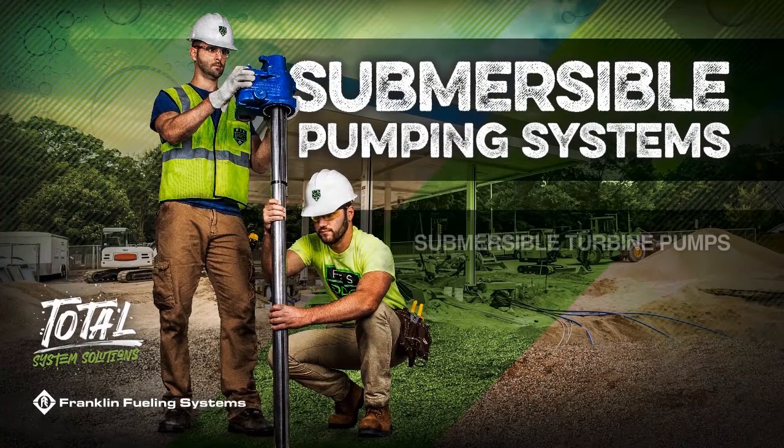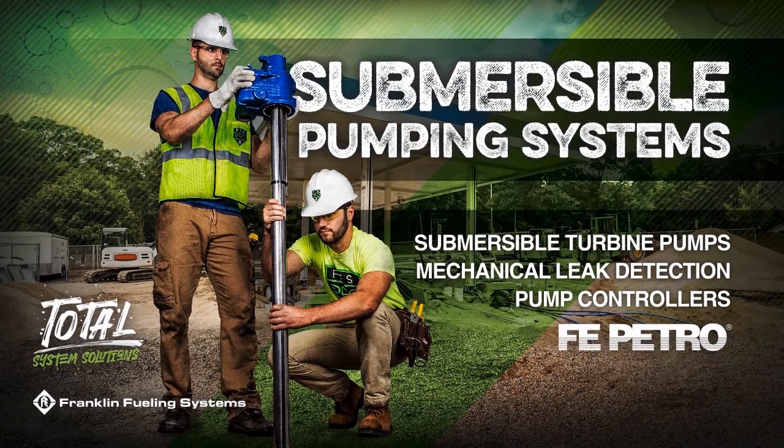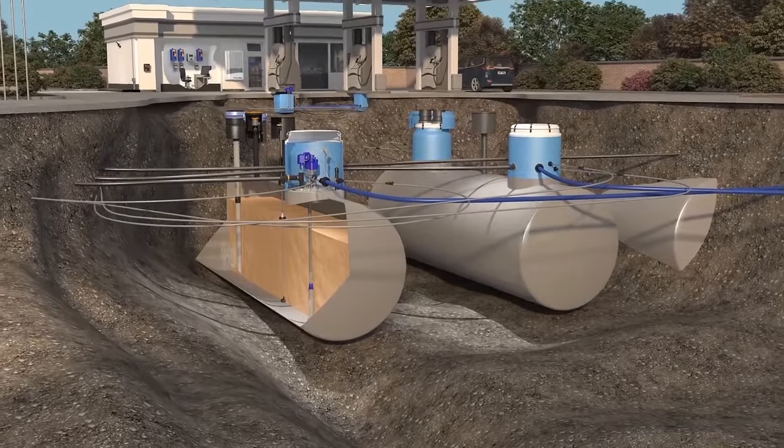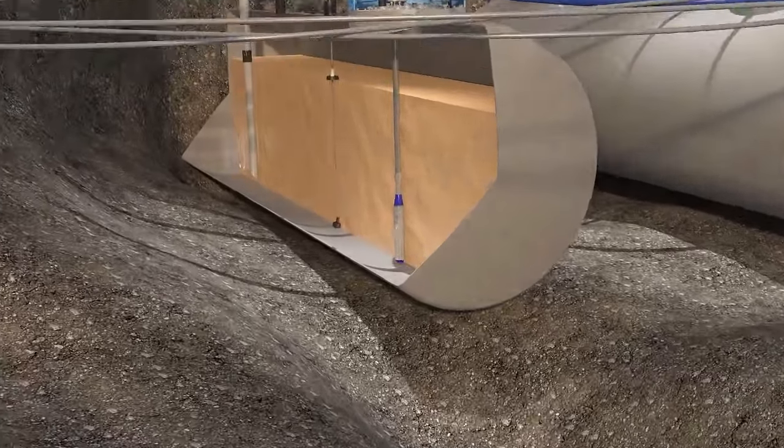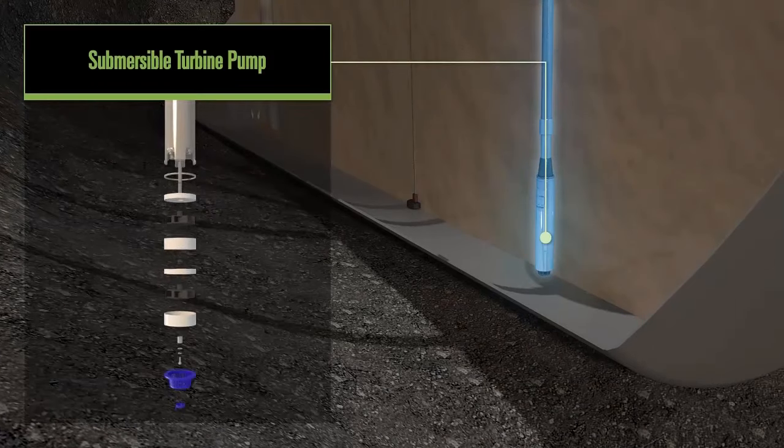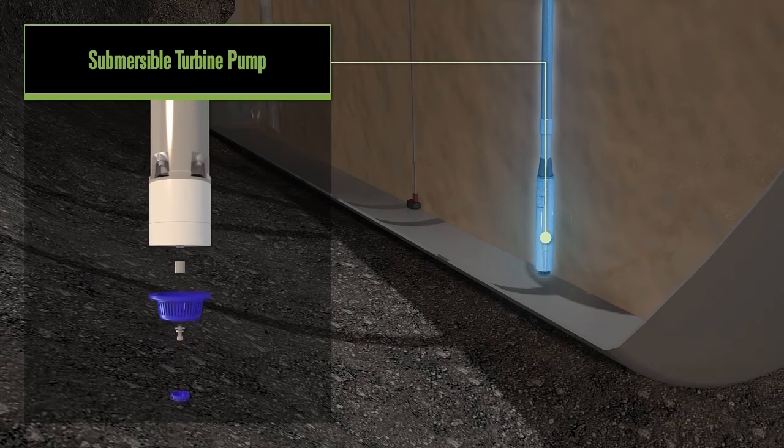Now that we've discussed the safety measures involved in moving fuel, how does fuel actually get from the tank to the dispenser? The submersible pumping system product category includes the FE Petro brand submersible turbine pump.